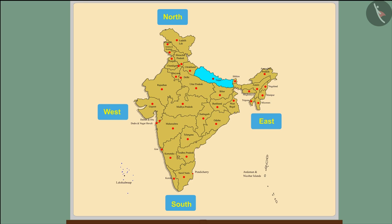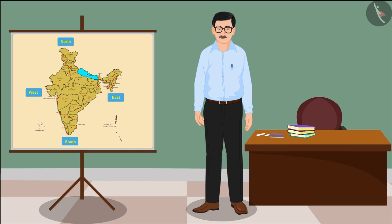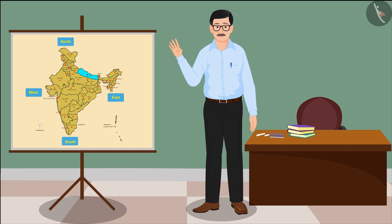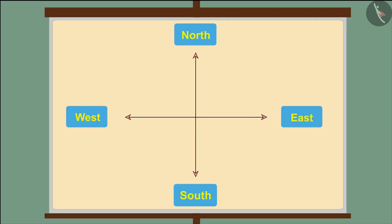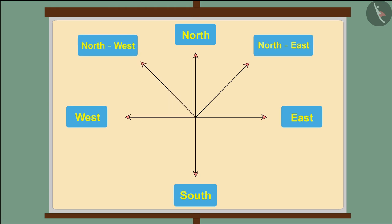But do you know that there are four additional directions besides these? Let's talk about them. There is one more direction in the middle of north and east — it is called northeast. Similarly, the direction in the middle of north and west is called northwest. The direction between south and east is called southeast.